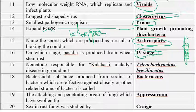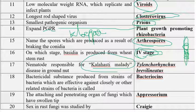The nematode responsible for Kolahasti malady disease of groundnut is Tylenchorhynchus brevilineatus. It is called Kolahasti malady because the disease infected with this nematode was first reported in the Kolahasti area of Andhra Pradesh.